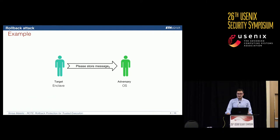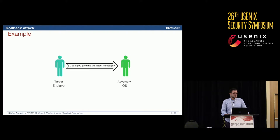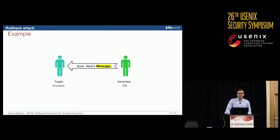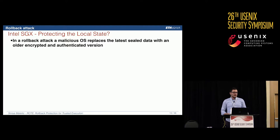But then the enclave is restarted — the machine shuts down, reboots, or suffers some amnesia. It asks the OS: 'Could you give me the latest message?' A malicious OS would reply: 'Sure, here's message one.' That's a problem, because there is no way to detect that message one was not the latest message. It was encrypted and authenticated by the enclave, so it can be decrypted without any problems, but the enclave doesn't know if it was the latest state.